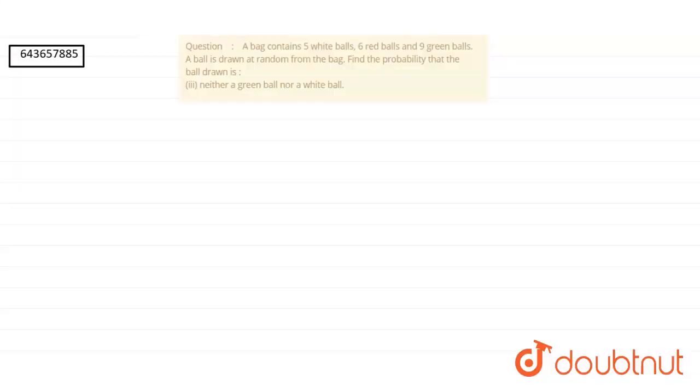So we have a question of probability which says that a bag contains 5 white balls, 6 red balls and 9 green balls. A ball is drawn at random from the bag. Then we have to find the probability that the ball drawn is neither a green ball nor a white ball.